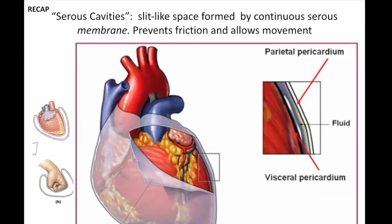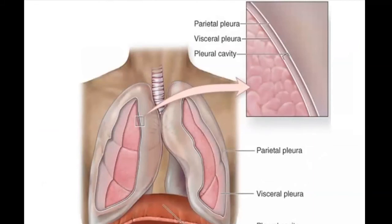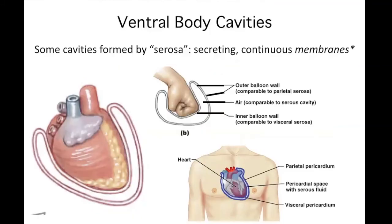Your lungs likewise are sitting in those little sacs in the pleural cavity. Here's the lung tissue, here's the outside of your ribcage, you've got this fluid-filled space in here. These ventral body cavities are formed by the serosa secreting continuous membranes — and by continuous, it means like a weird balloon that your fist is in: it's all one surface area.